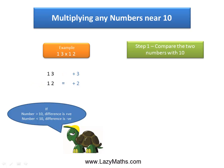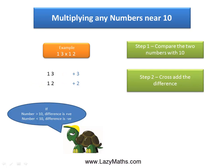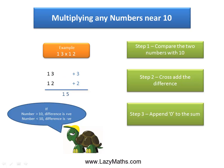The next step is to simply cross-add these differences. So we add 13 plus 2, which gives us 15 — or we can add 12 plus 3, which also gives us 15. We can do either one of the two additions. Then we simply append a 0 to 15 to make it 150.